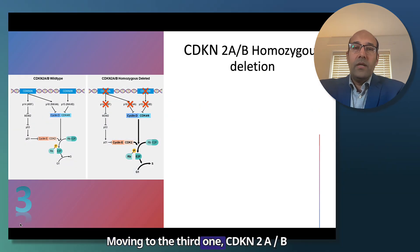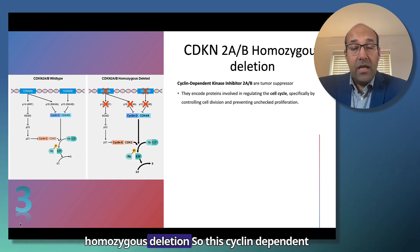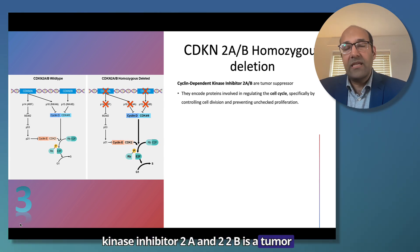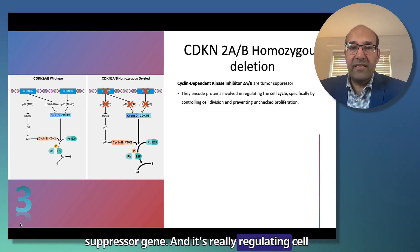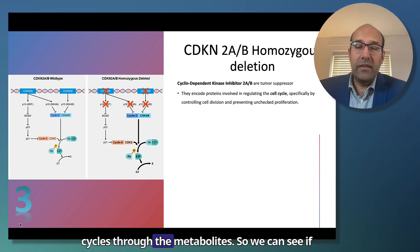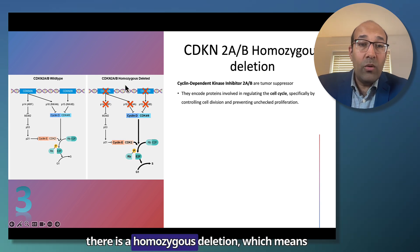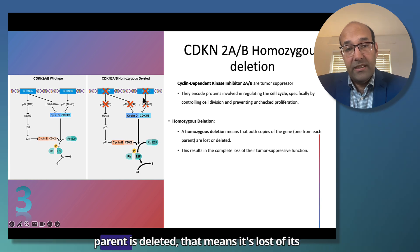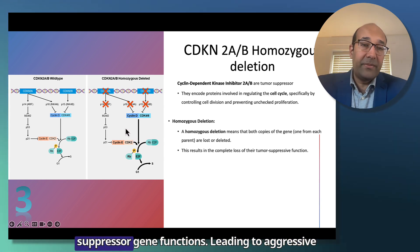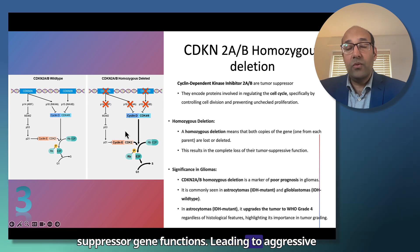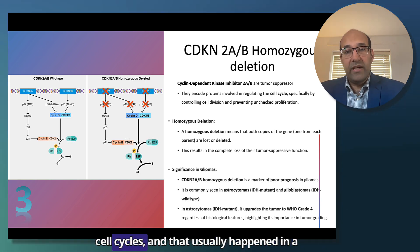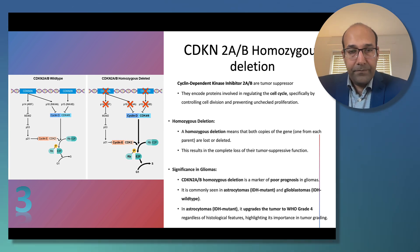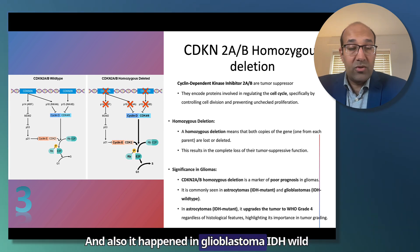Moving to the third mutation: CDKN2A and CDKN2B homozygous deletion. This cyclin-dependent kinase inhibitor 2A and 2B is a tumor suppressor gene regulating cell cycles through its metabolites. If there is a homozygous deletion — meaning both copies of the gene, one from each parent, are deleted — that leads to loss of suppressor gene function, driving aggressive cell cycles. This usually happens in astrocytoma IDH mutant, upgrading it to grade 4, and also occurs in glioblastoma IDH wild type.